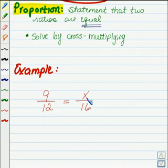9 over 12 equals x over 16. Let's say your sports team again had 9 wins and 12 losses. If you kept up that same ratio, how many wins would you expect to have for 16 losses?